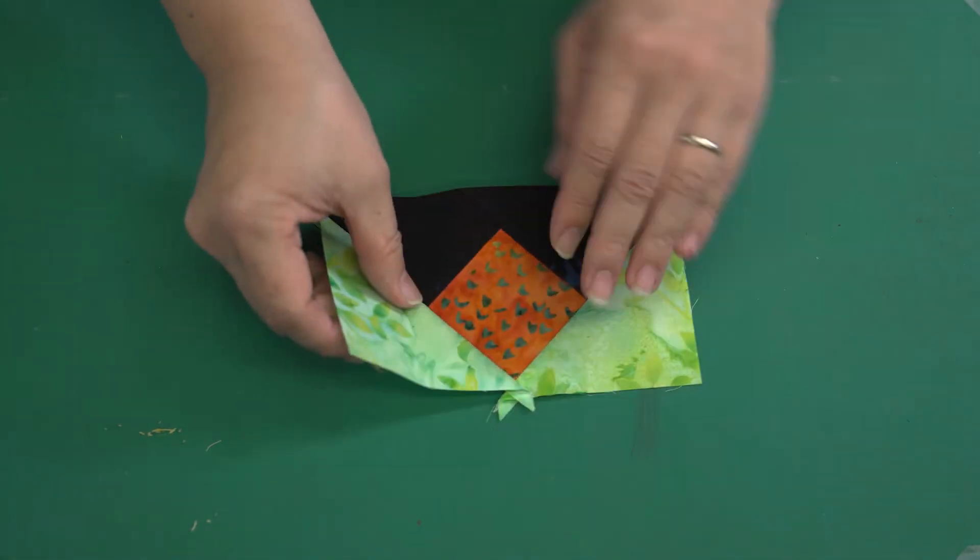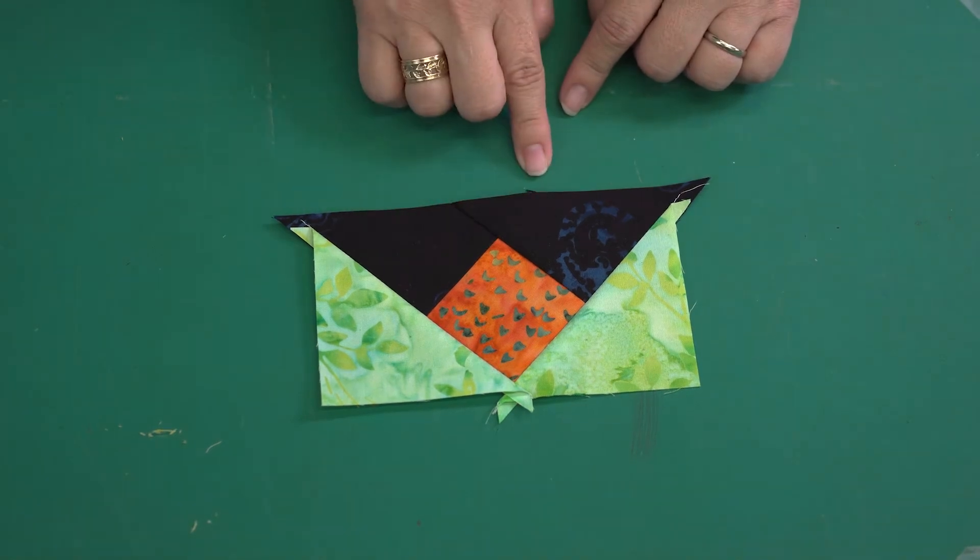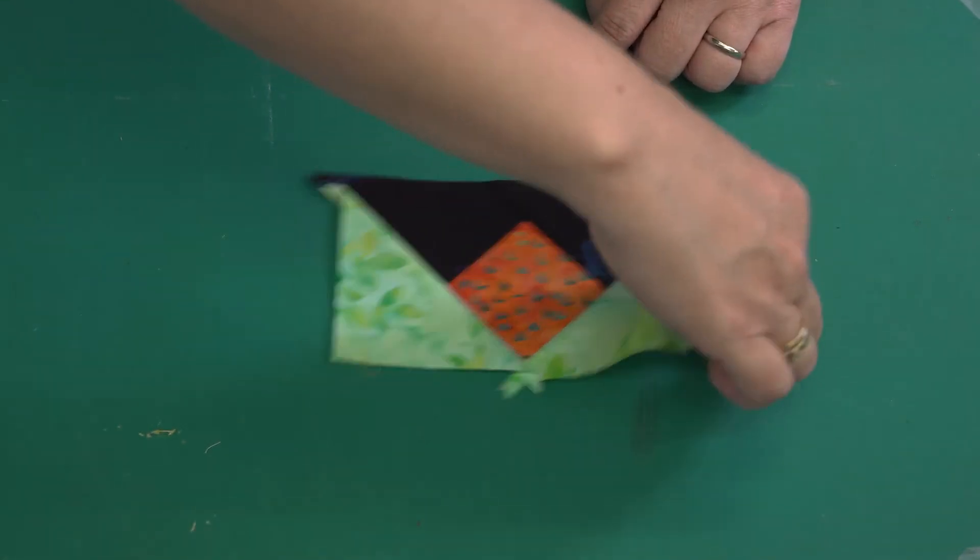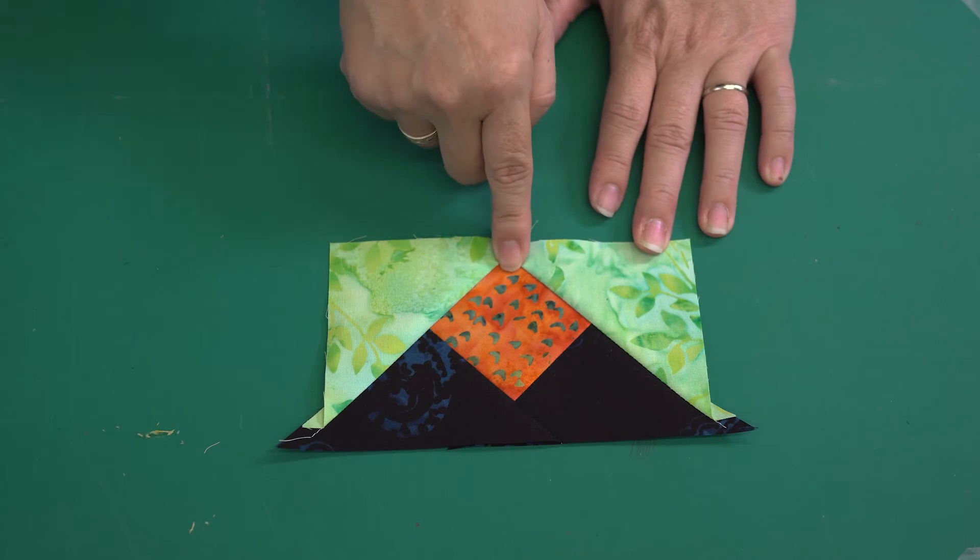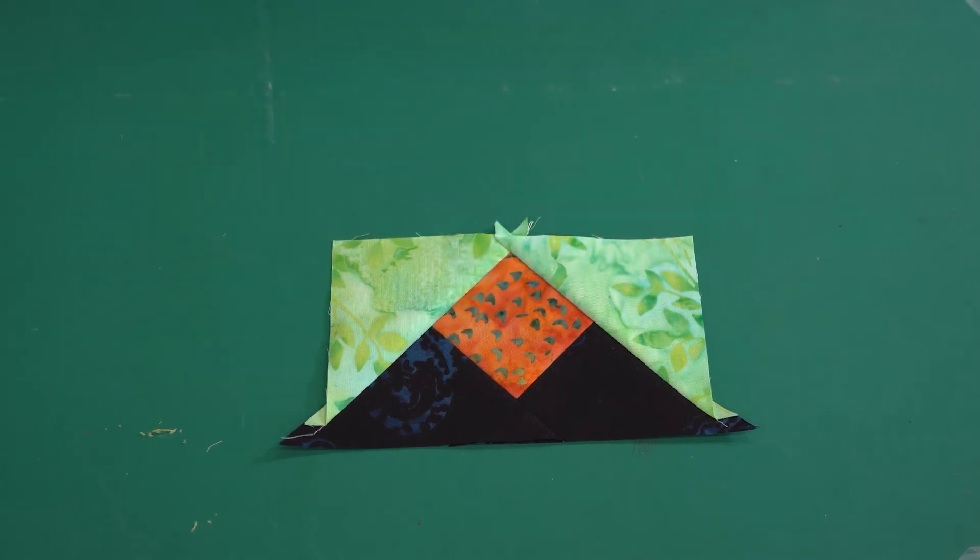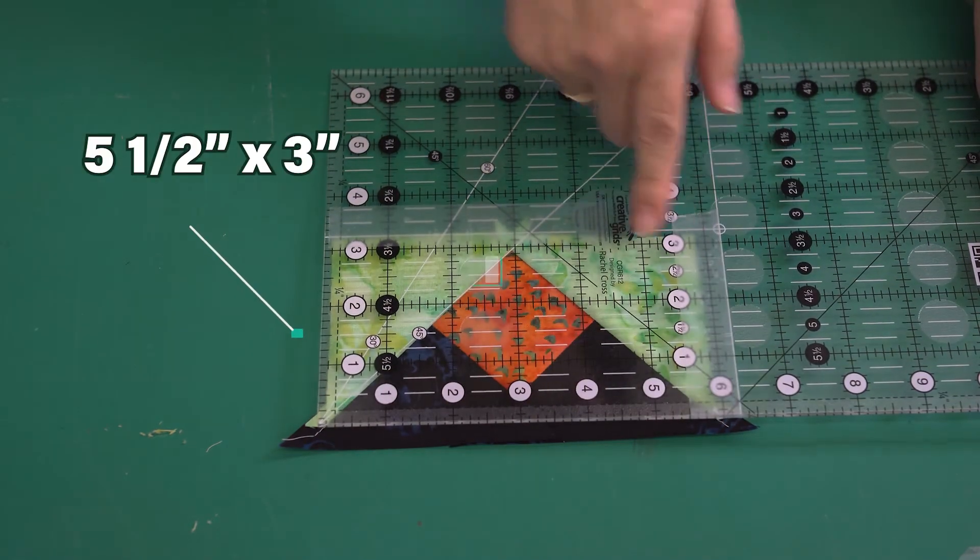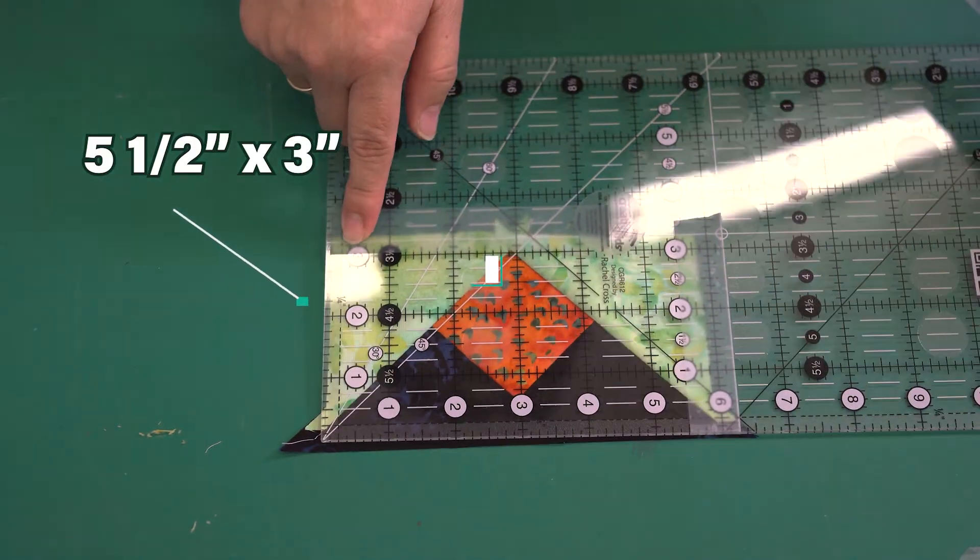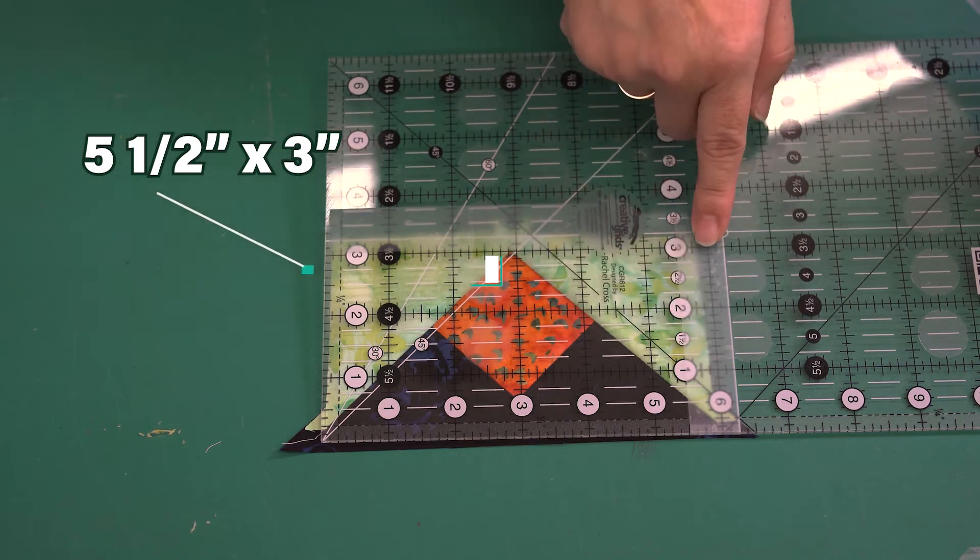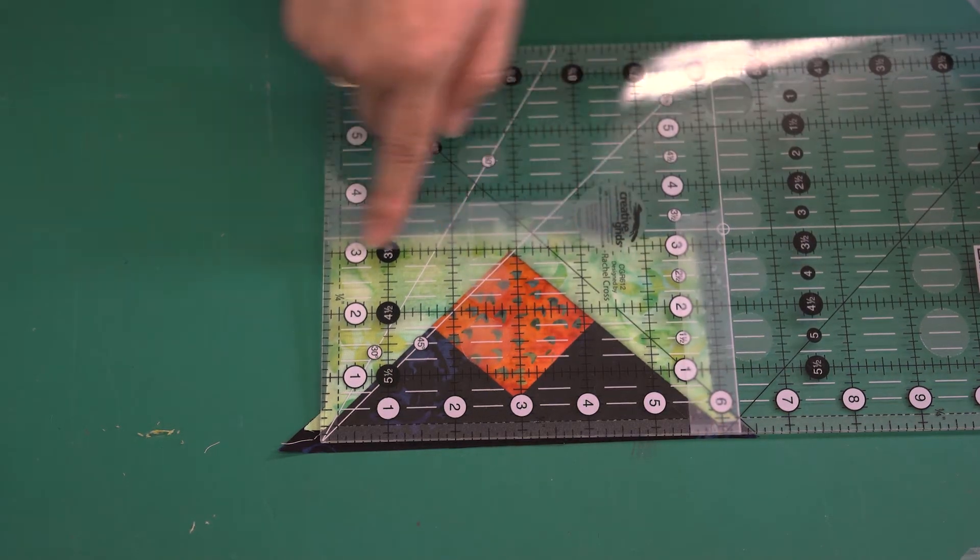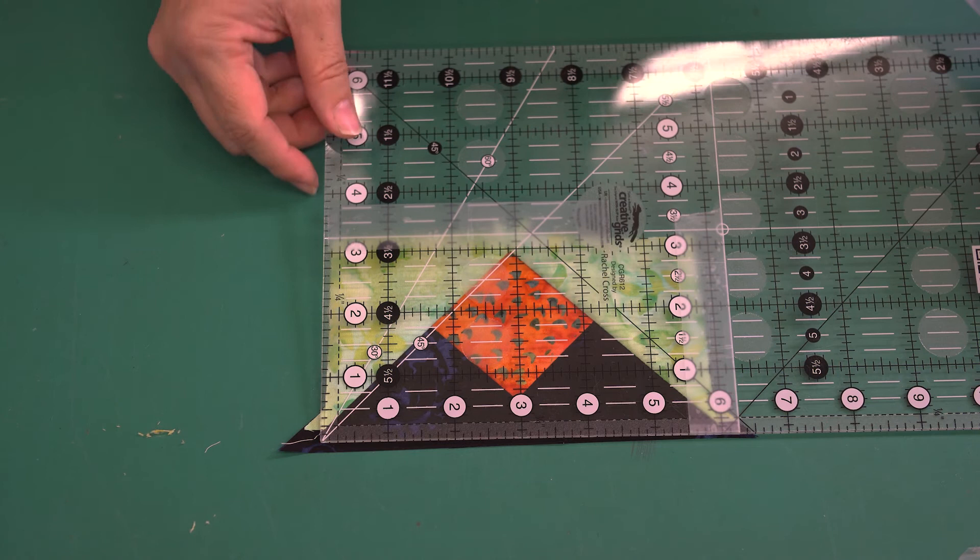When you press out you get this. I start trimming with the flying geese point facing towards me. This block is going to be trimmed to five and a half by three. I have scotch tape on the points of the final size of my rectangle.